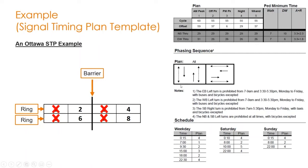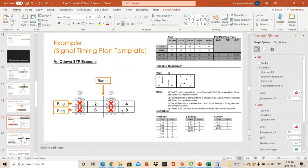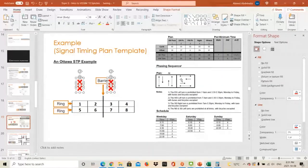Northbound and southbound left turns are prohibited at all times, meaning zero left turns during the peak in either direction. When left turns are prohibited, the odd phases — which are normally assigned to left turns — disappear from your ring barrier structure. They will not be part of your ring barrier design for this analysis.